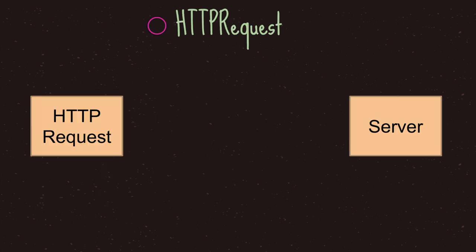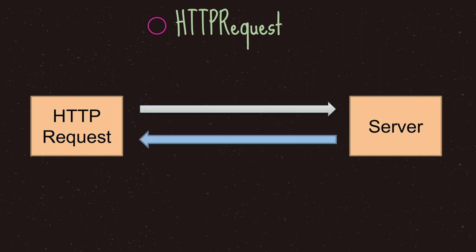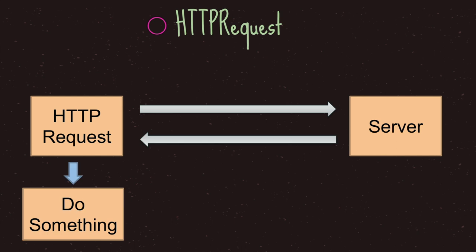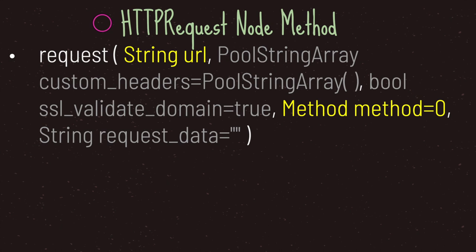Let's go over a quick view of the HTTP request node and how it sends data to a server. First, you use the HTTP request node to request information from a server. When the server has received your request, it will respond appropriately. Your HTTP request will then need to do something with the returned data. In order to send a request to a server, you're going to need to use the request method.